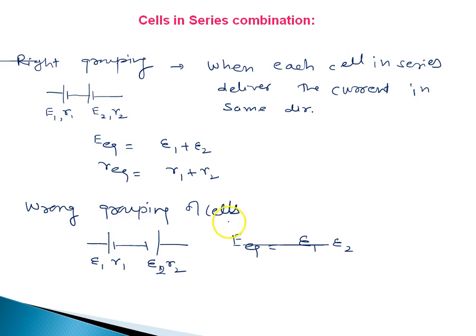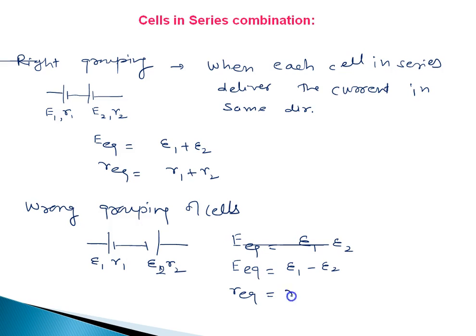To summarize: if E1 is greater than E2, then E equivalent equals E1 minus E2; if E2 is greater than E1, then E equivalent equals E2 minus E1. The equivalent resistance is R1 plus R2, because both are connected in series regardless of polarity. Resistance is always added.